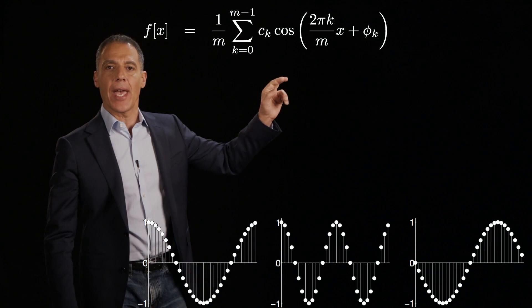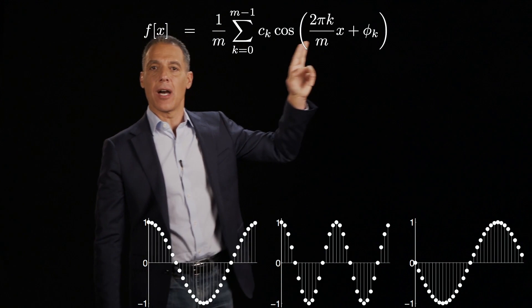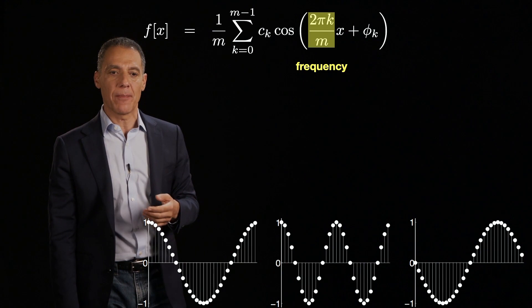So we have our discrete time signal here, f of x, and we're going to write it as a sum, k equals 0 to m minus 1, of different amplitude, frequency, and phase modulated cosines. So let me explain what I mean by that.